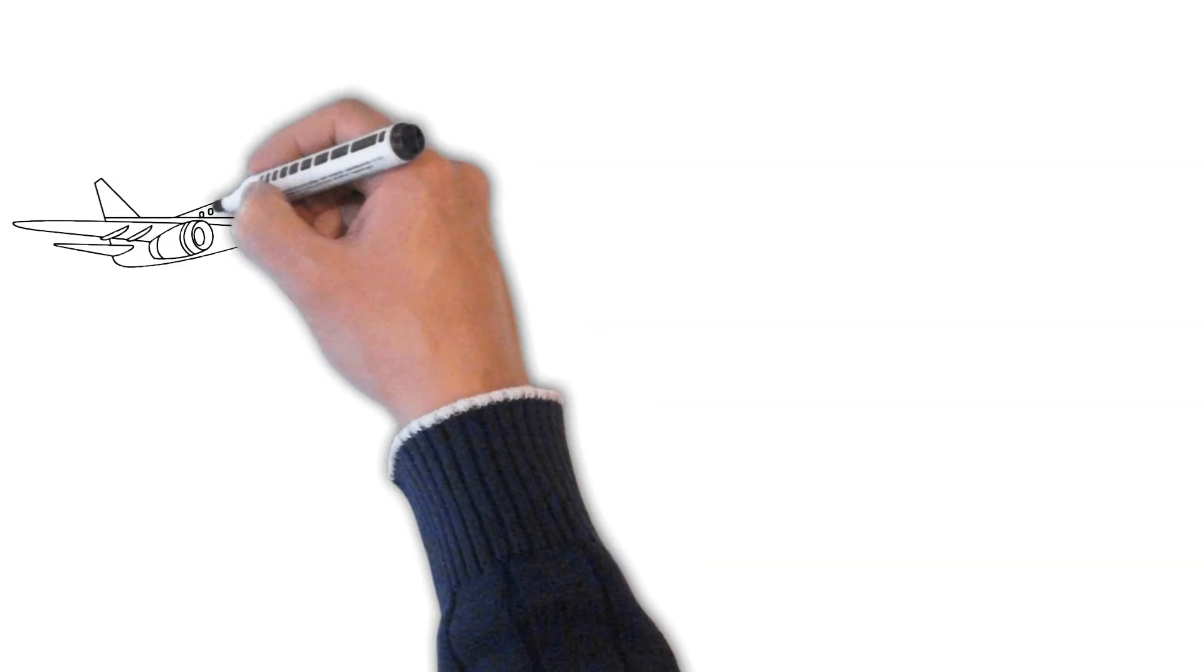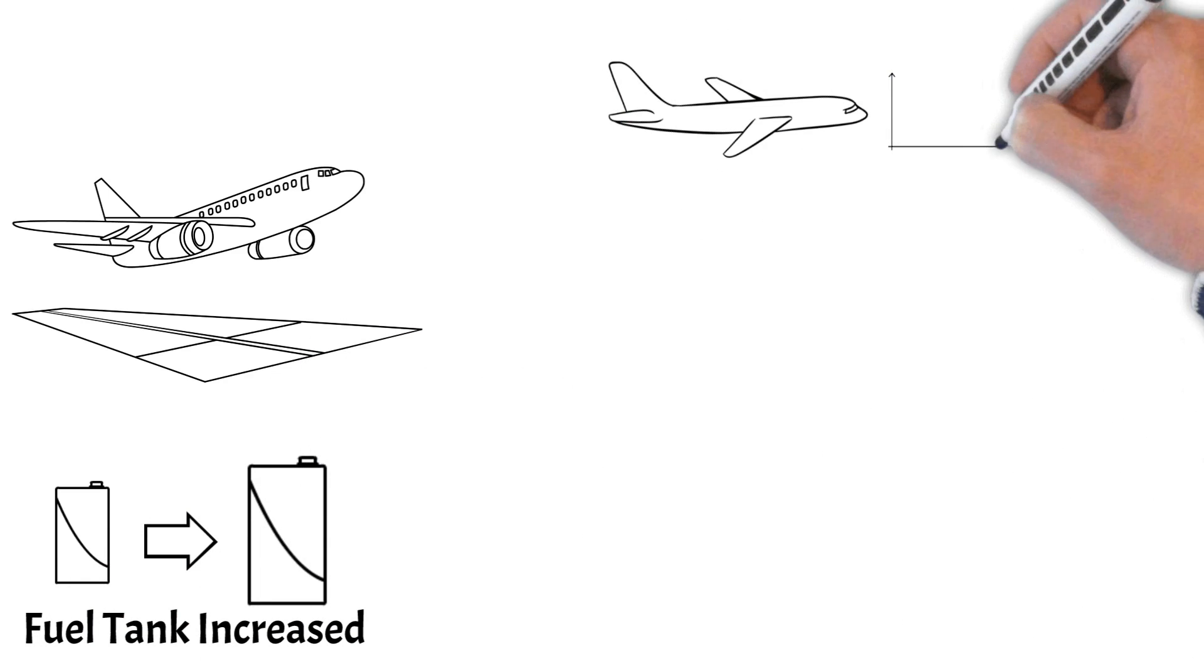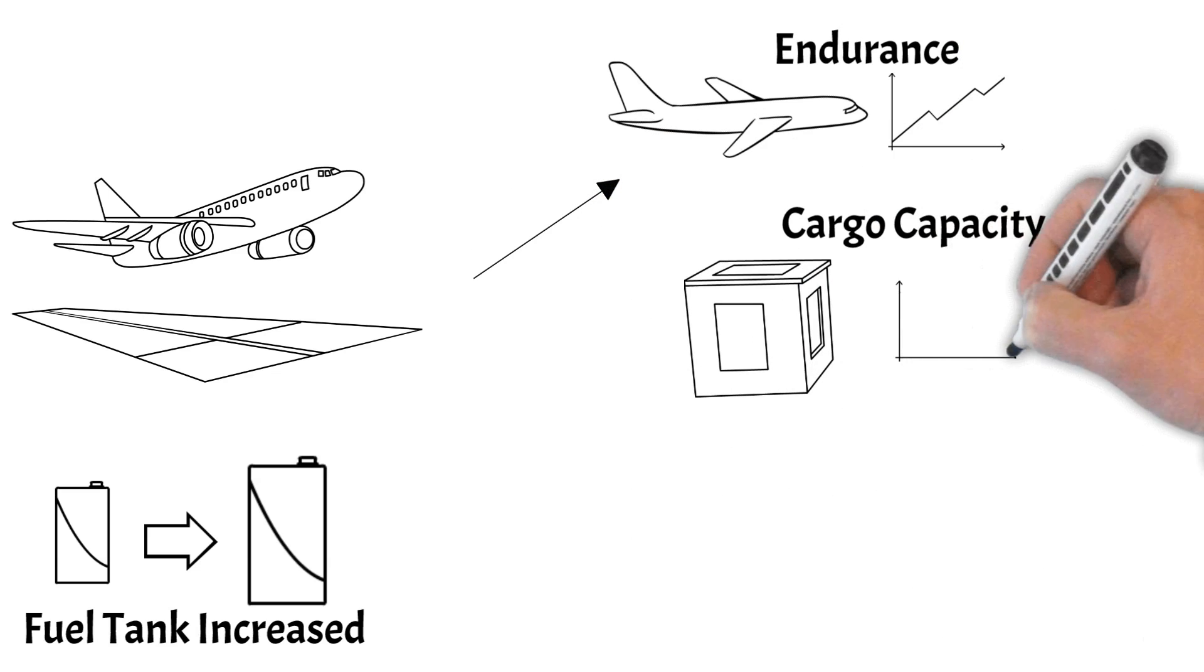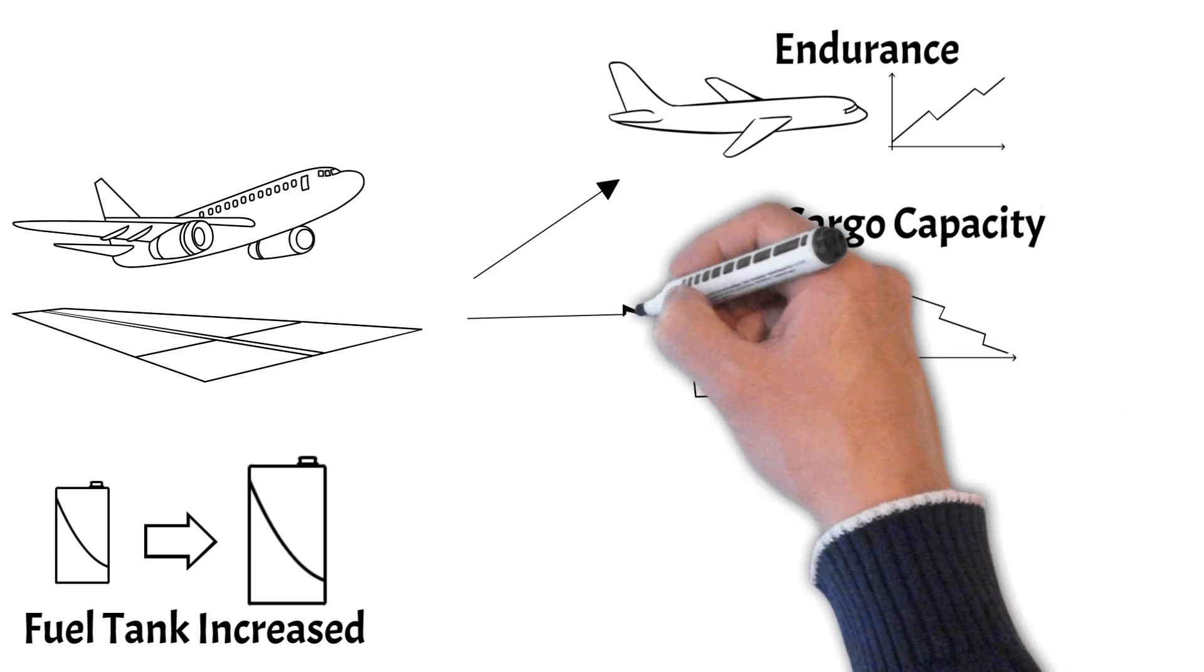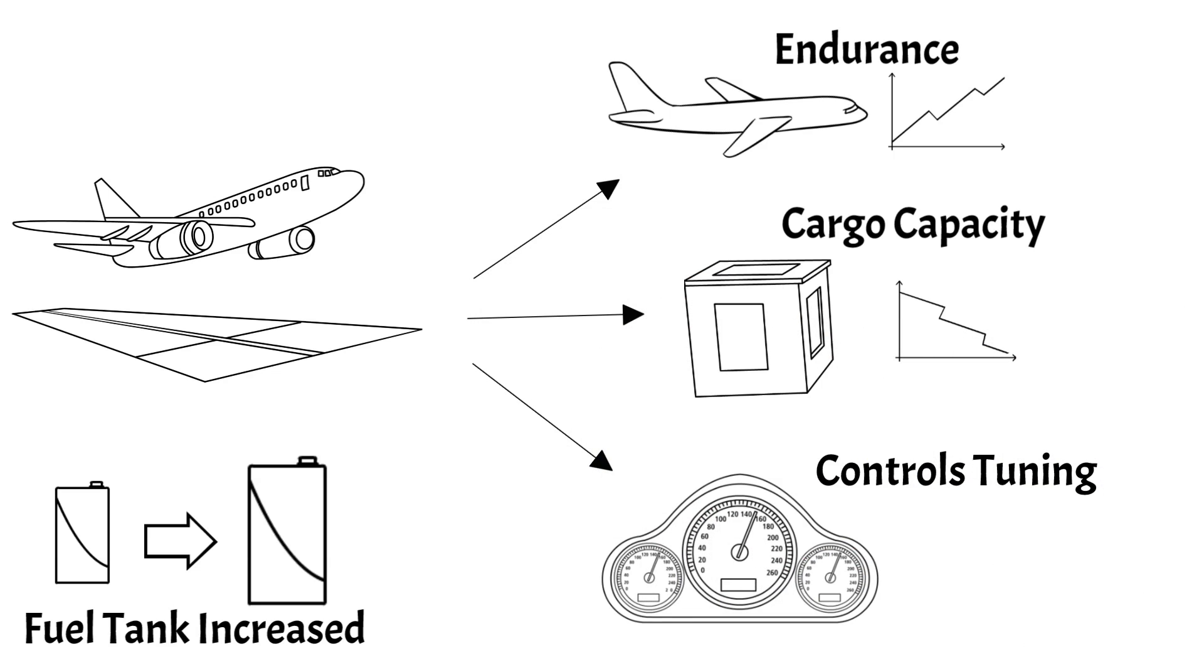For example, if the fuel tank size is increased then the endurance calculation is modified and the total endurance increases. It likely negatively affects the amount of payload capacity. It may change the center of gravity of the plane enough that it handles differently and needs software updates. All this to say, the change of one mechanical part in the model will propagate to all of the other disciplines.